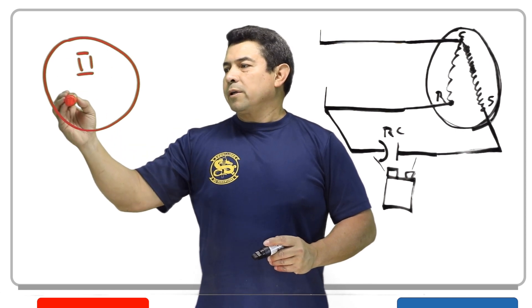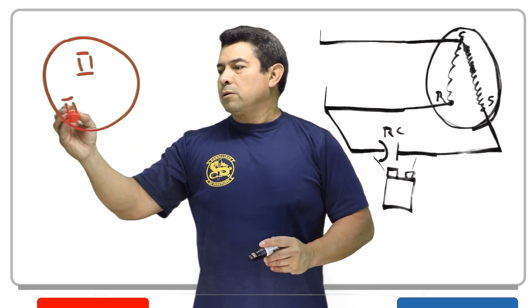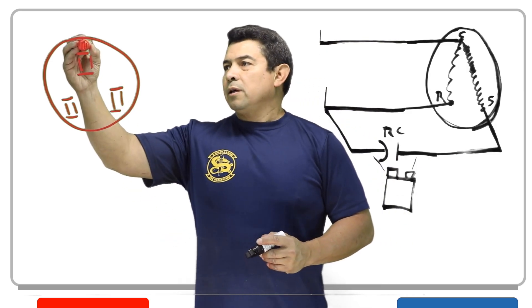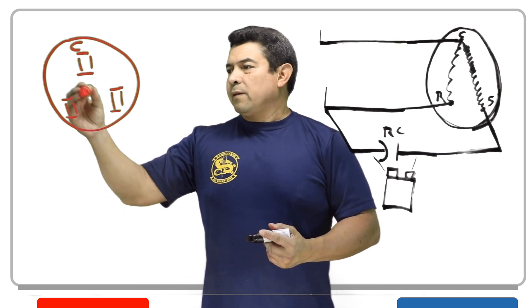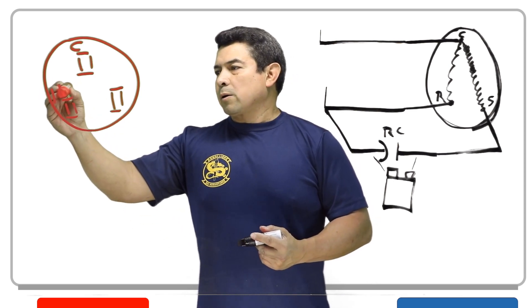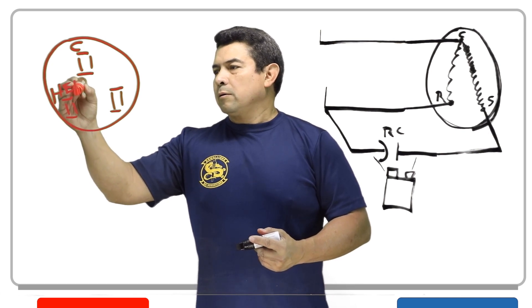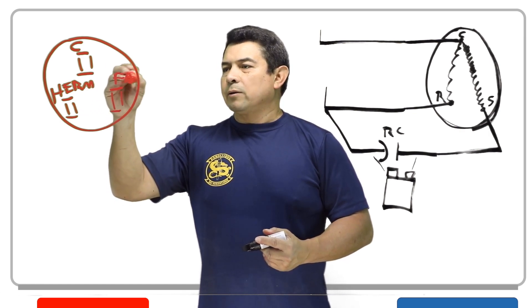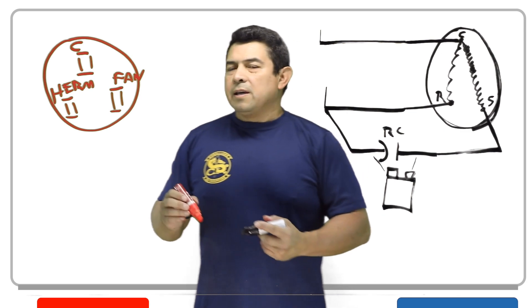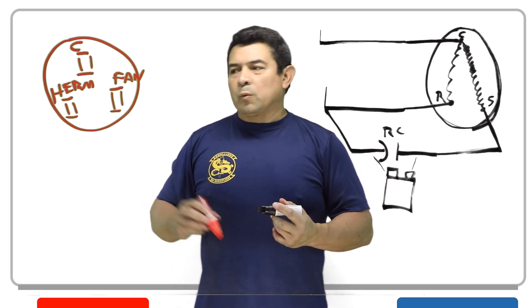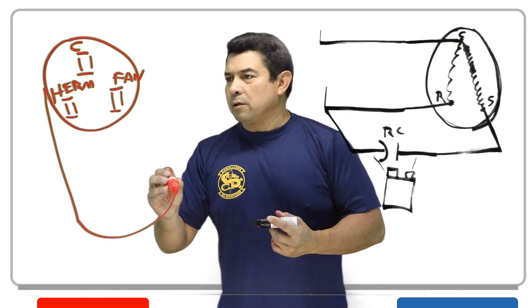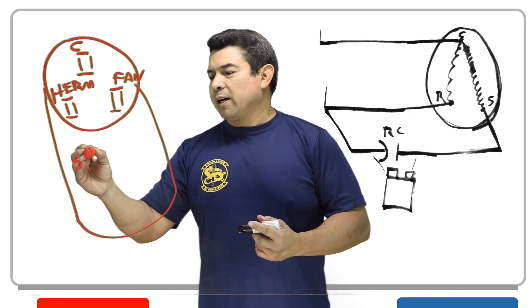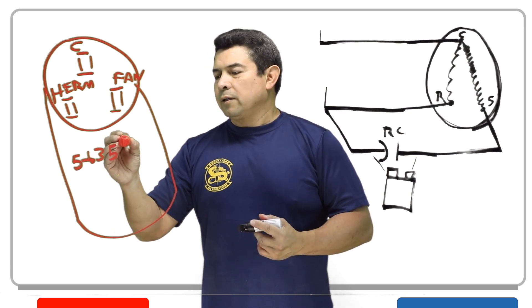So on this, what I wanted to talk about basically was the type of capacitors that are round like this. And they happen to have one, two, three connections like this. Typically, this one is going to have a C on it, or it's going to say common. This one here might say, let's say, Herm. And this one here will probably say fan on it.